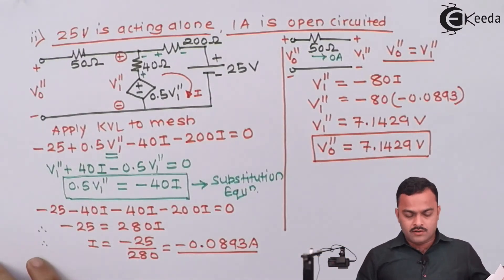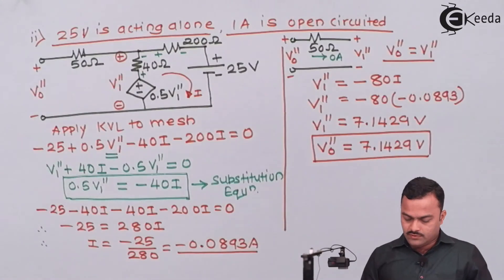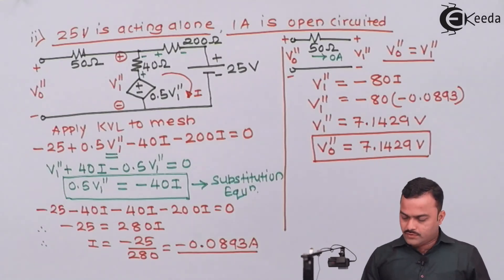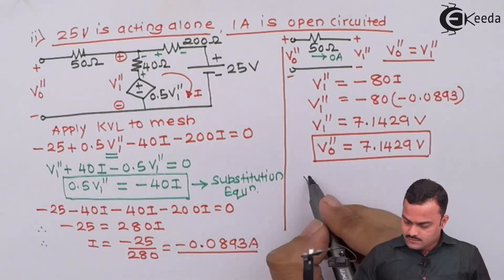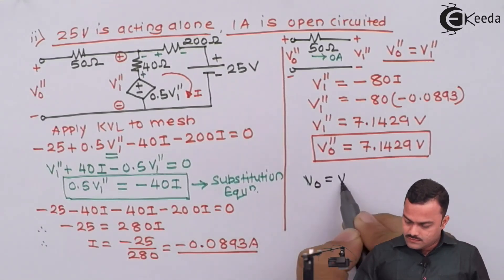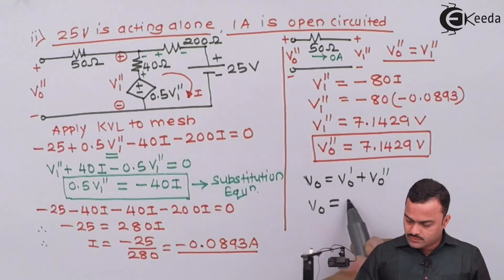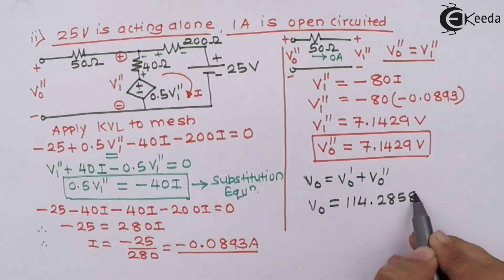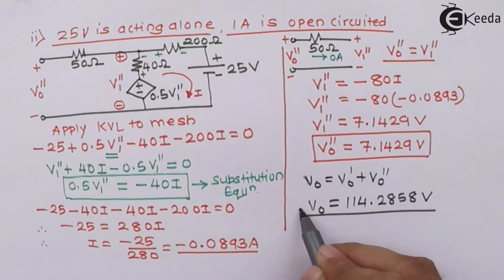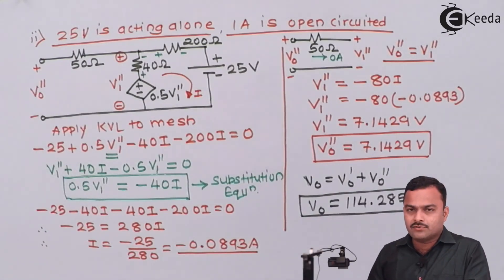Earlier we got V0' as 107.1429 V, and V0'' is 7.1429 V. By superposition, total V0 = V0' plus V0'' = 107.1429 + 7.1429 = 114.2858 V. Here is the final answer. I hope you have understood the problem. Thank you.